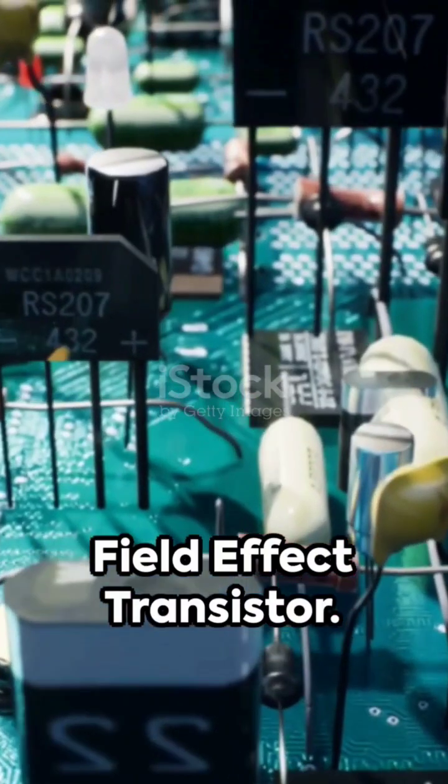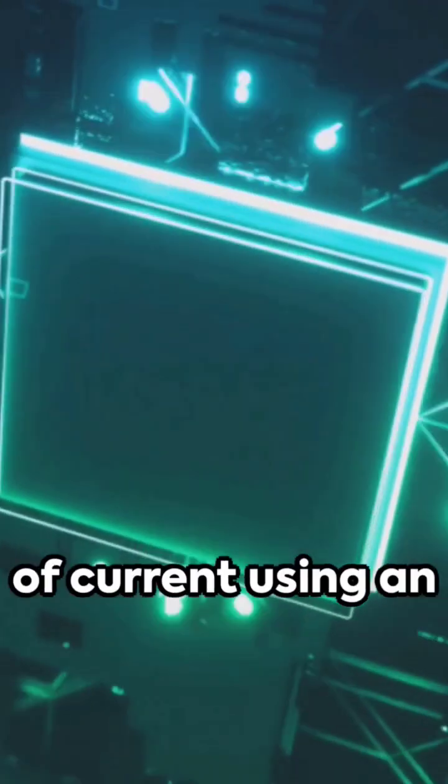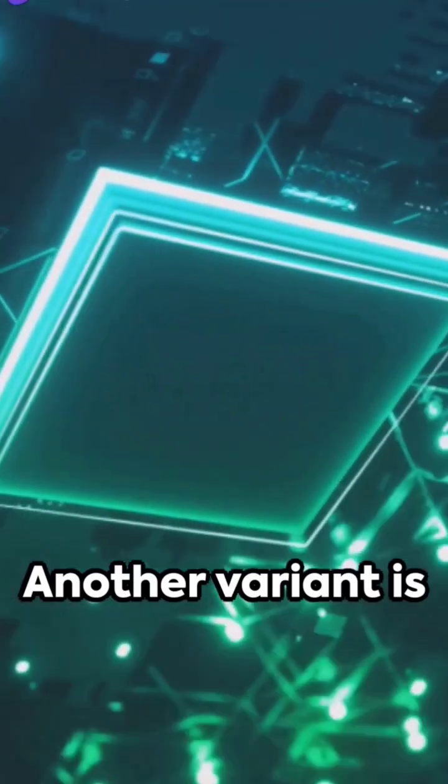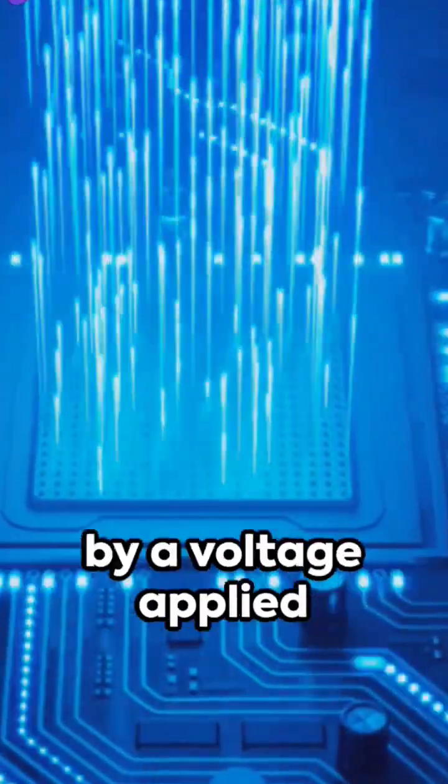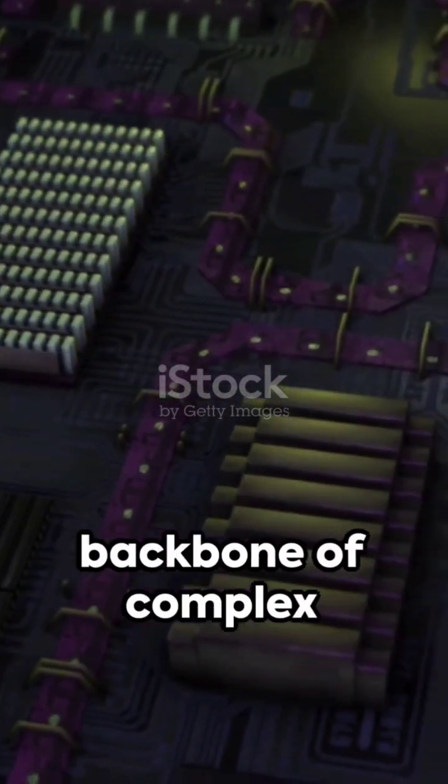Next up, the FET or field effect transistor. The most common type is the MOSFET, which manipulates the flow of current using an electric field. Another variant is the JFET, where current is controlled by a voltage applied to a PN junction. These tiny, mighty transistors are the backbone of complex systems like microprocessors, amplifiers, and memory chips.